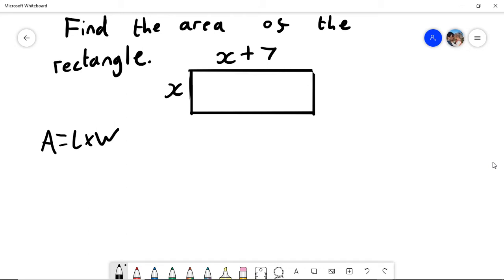And so, because we know the length is x plus 7 and the width is x, we can do this, which is the equivalent of expanding this bracket.